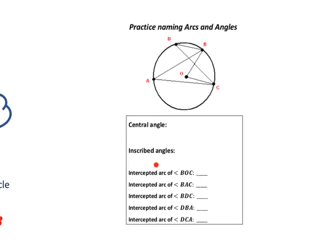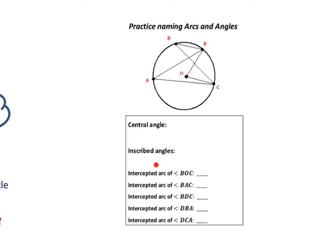Now let's do some practice naming arcs and angles on the front side of the practice sheet. The difference between a central angle and an inscribed angle is that a central angle has its vertex at the center of the circle, whereas an inscribed angle has its vertex on the circle. The central angle in this diagram is angle BOC — that is the only central angle. For inscribed angles, the first one is BDC — that is an inscribed angle where D is the vertex and that's on the circle.